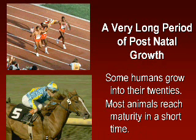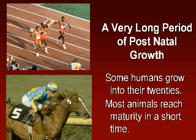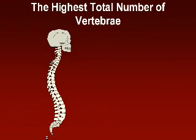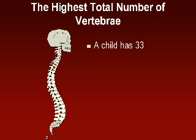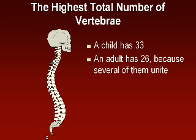Maybe the reason we have such a long postnatal growth is because we have so much to learn before we become adults. Lots of times people mature physically long before they mature mentally. As for vertebrae: a child has 33 vertebrae, an adult has 26, because some of them unite.